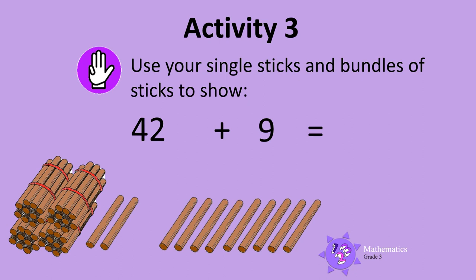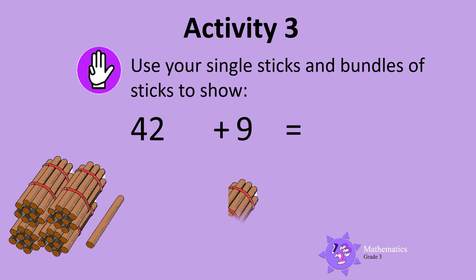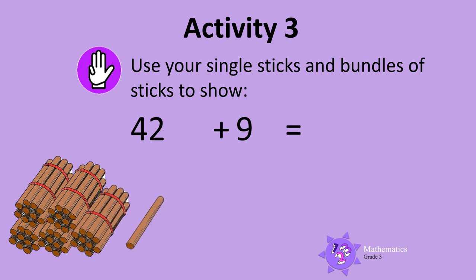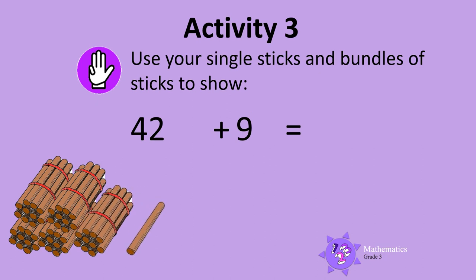We can bundle 10 of the single sticks to make a new bundle. Now let's count: 10, 20, 30, 40, 50, and then the single sticks: 1. So there are now 51 sticks. 42 and 9 is 51. That's it!